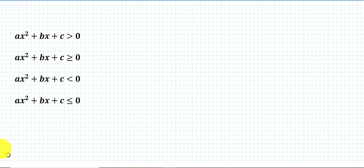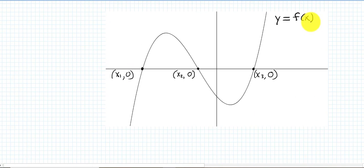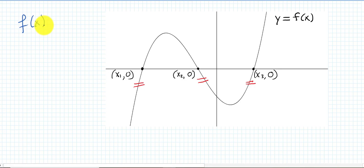The method we're going to use to solve quadratic inequalities is part algebraic, part graphical — and the most important aspect will be the graphical part. Let's go over how to solve an inequality graphically. Suppose you're given the graph of a function y = f(x) with three x-intercepts: one, two, and three. Suppose you want to solve the inequality f(x) ≥ 0.